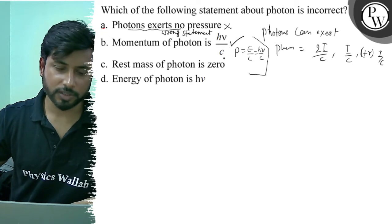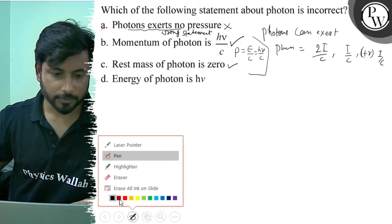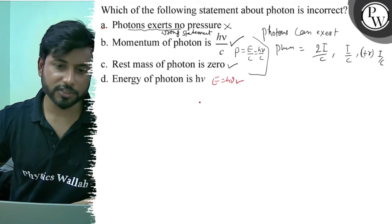Rest mass of photon is 0. This statement is also absolute correct. And our third statement, energy equals to H nu by C. This statement is also correct.